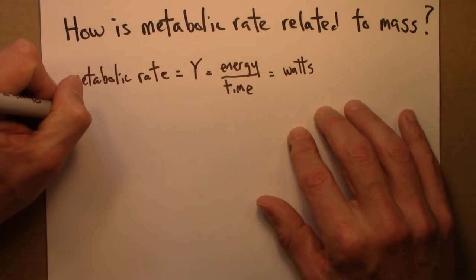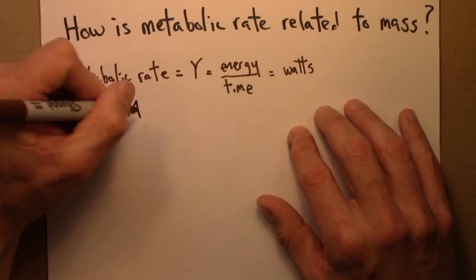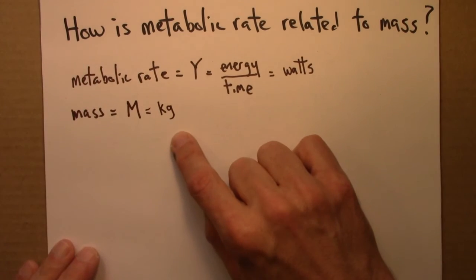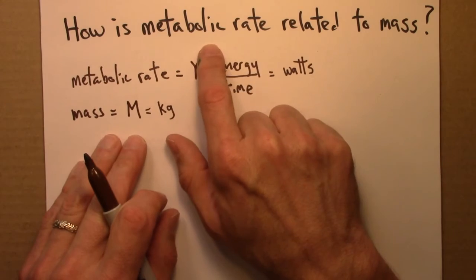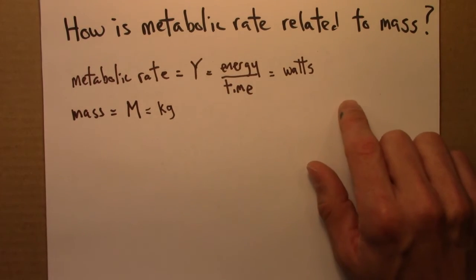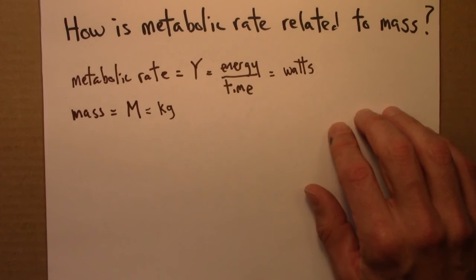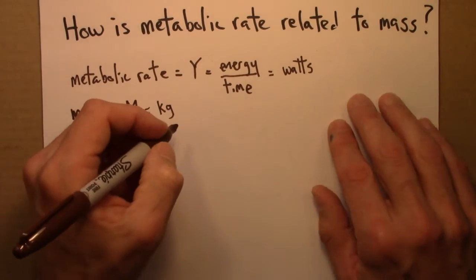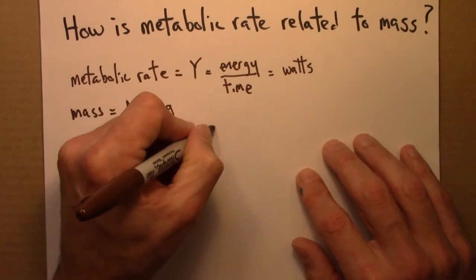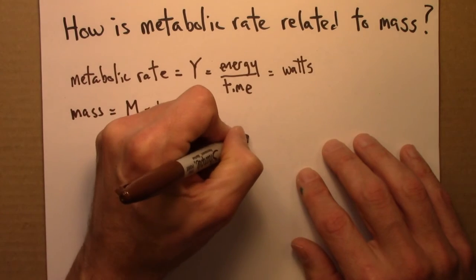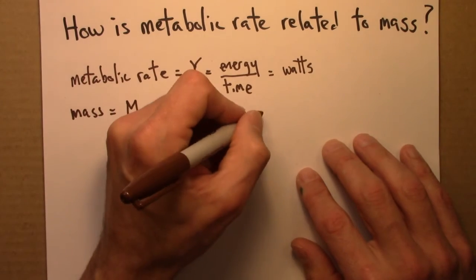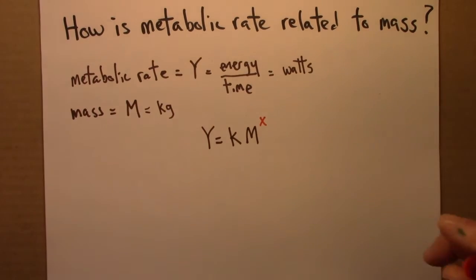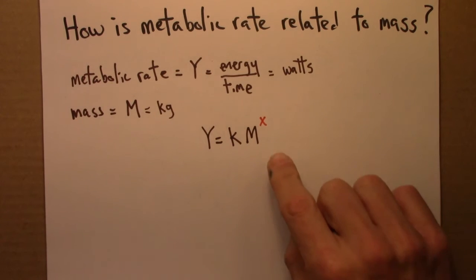Mass is denoted capital M, and those units are usually kilograms. We want to know how metabolic rate is related to mass, and we've seen that there is a straight line on a log-log plot. So we suspect there's a scaling relationship of the form Y equals some constant times M to some power, and the question for us is: what is this exponent?